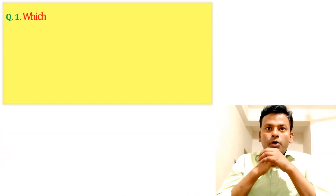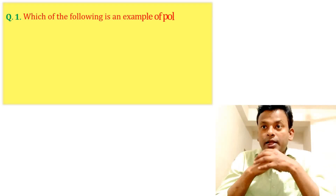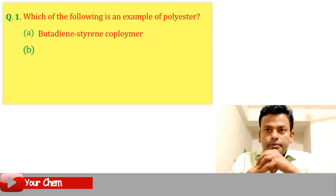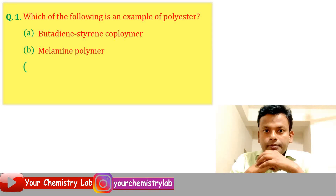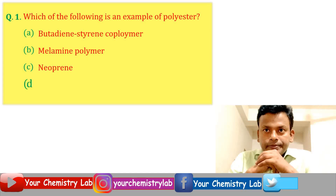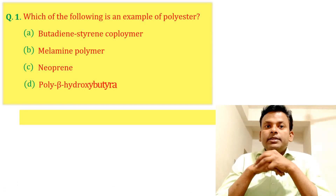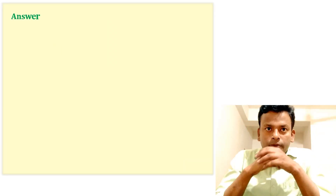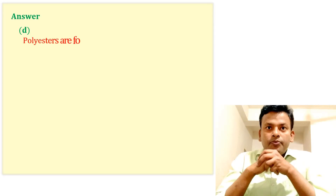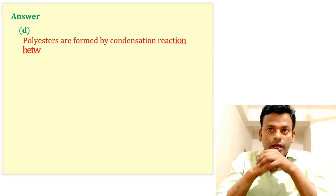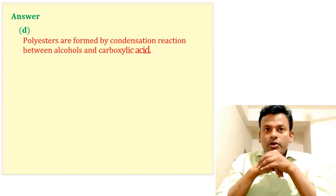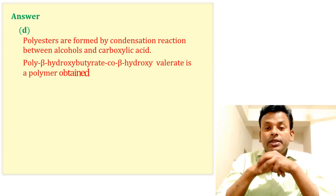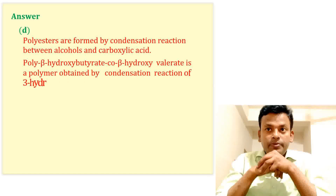Question 1: Which of the following is an example of polyester? Options A, B, C, and D. This question was set in JEE Main 24th June 2022 morning shift. Answer: Option D is correct. Polyesters are formed by condensation reaction between alcohol and carboxylic acid. Poly-β-hydroxybutyrate co-β-hydroxyvalerate is a polymer obtained by condensation reaction of 3-hydroxybutanoic acid with 3-hydroxypentanoic acid.